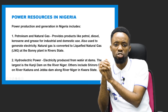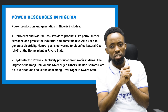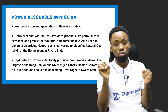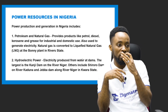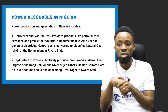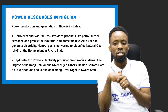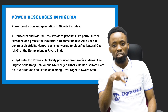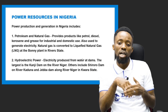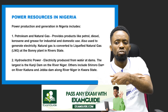The second resource is power resources in Nigeria. Power production can come in the form of petroleum and natural gas. Petroleum products like petrol, diesel, kerosene, and grease are used for industrial and domestic use, and to power engines that generate electricity. For example, the LNG plant in Bonny, Rivers State converts natural gas to liquefied natural gas, and the people on that island actually use electricity generated from natural gas.